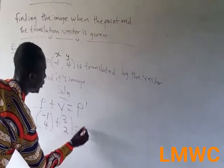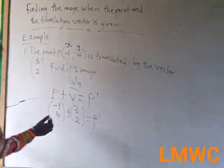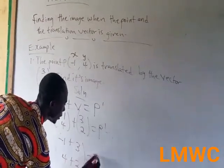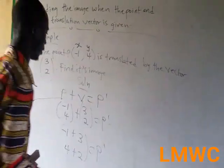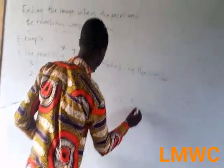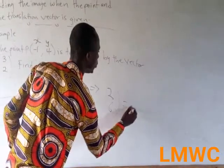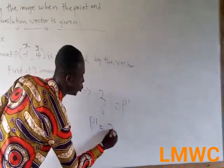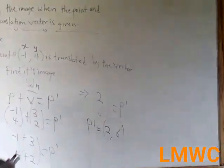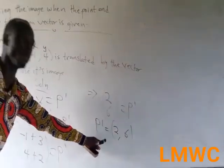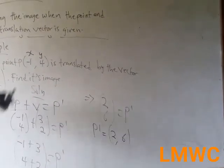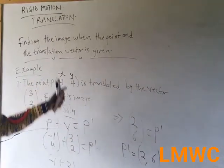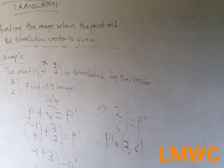So what is negative 1 plus 3? It is positive 2. And 4 plus 2 is 6, equal to P prime. We don't want our answer in vector form; we want it in coordinates. So it becomes (2, 6). That's our answer. Always, if you are given a point and a translation vector, you add the translation vector to the point to get the new image. That's the first heading under translation.